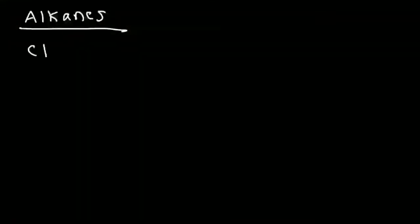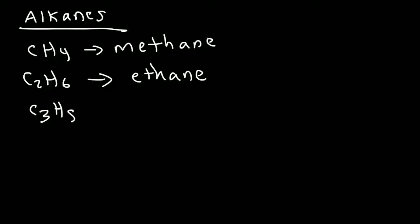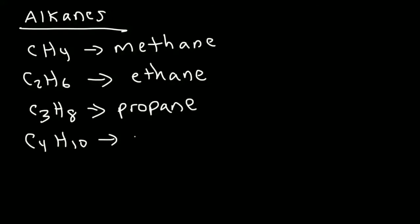Alkanes are saturated organic compounds, meaning that the carbon atoms are filled with hydrogen atoms. Methane is a one-carbon alkane — M-E-T-H-A-N-E. A two-carbon alkane, C2H6, is known as ethane. C3H8 is called propane. C4H10 is known as butane. So alkanes generally follow this formula: CnH2n+2.